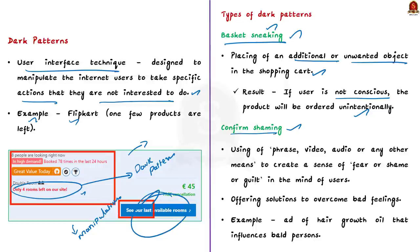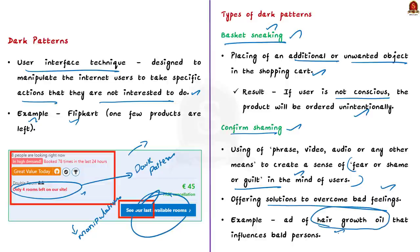The second one is confirm shaming. It is a dark pattern that uses phrases, video, audio or other means to create a sense of fear, shame or guilt in the minds of users. It also offers the solution to overcome such bad feelings. For example, take the ad for hair growth oil that frequently appears on YouTube. The ad shows a bald person facing shame among the public, and to overcome that, the person purchases hair oil and successfully regenerates his hair. Any bald person watching such a video will probably end up buying the hair growth oil. This is what is called confirm shaming.